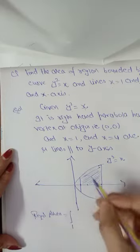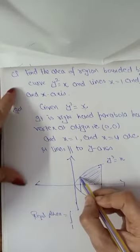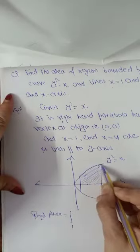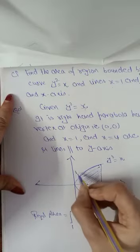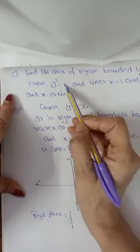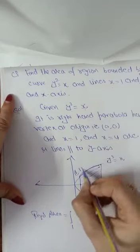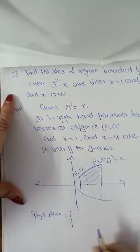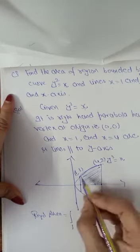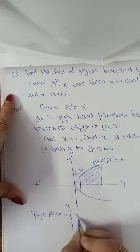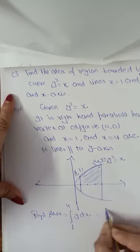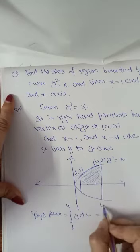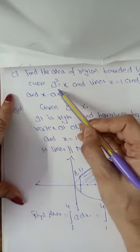Lower limit is 1 because we are calculating area from 1 to 4. Here x equals to 1, if x equals to 1, y will also become 1. If x equals to 4, y will be 2. So required area lower limit 1, upper limit 4, y dx.